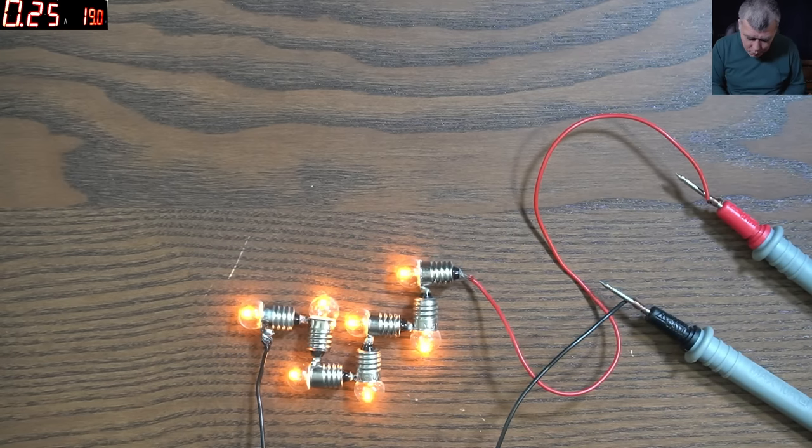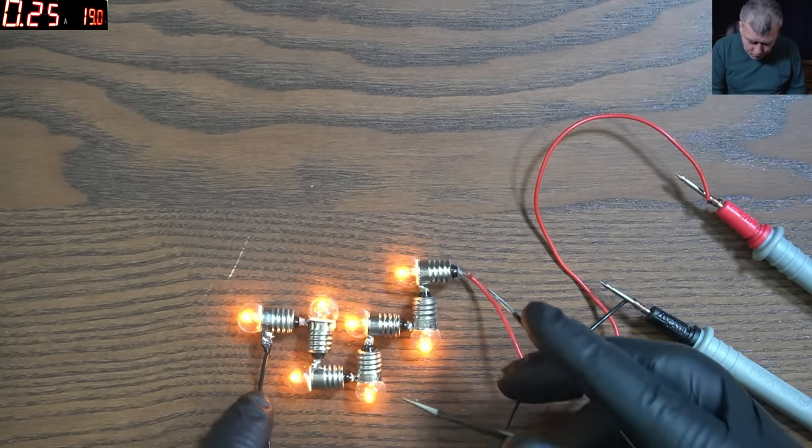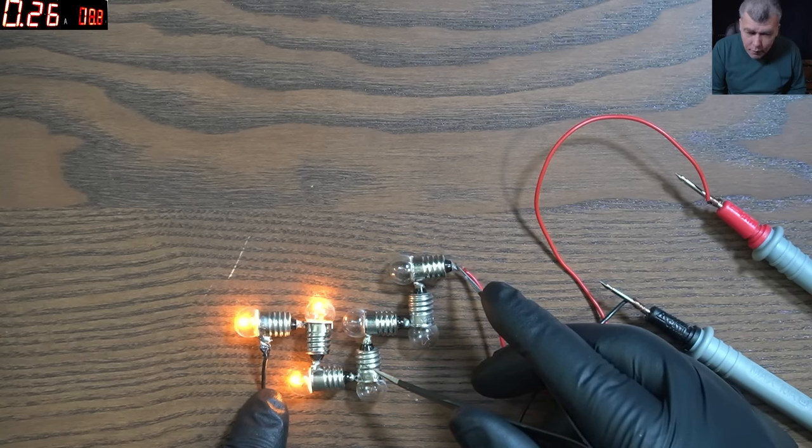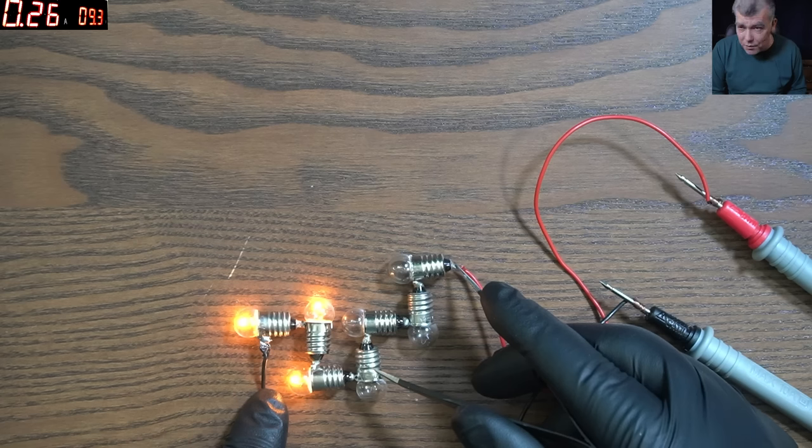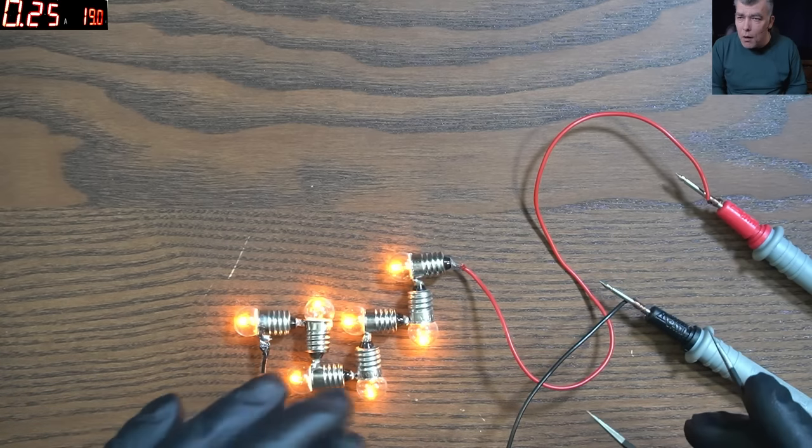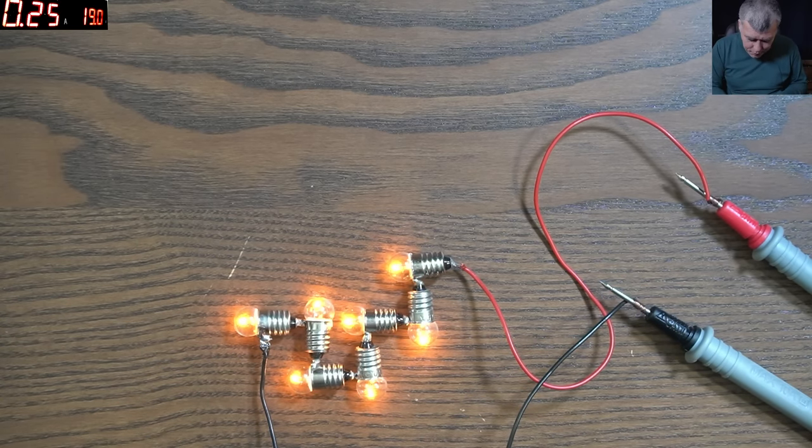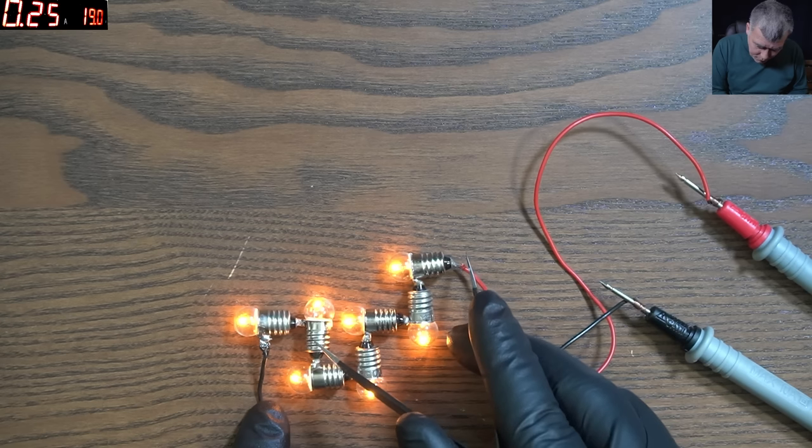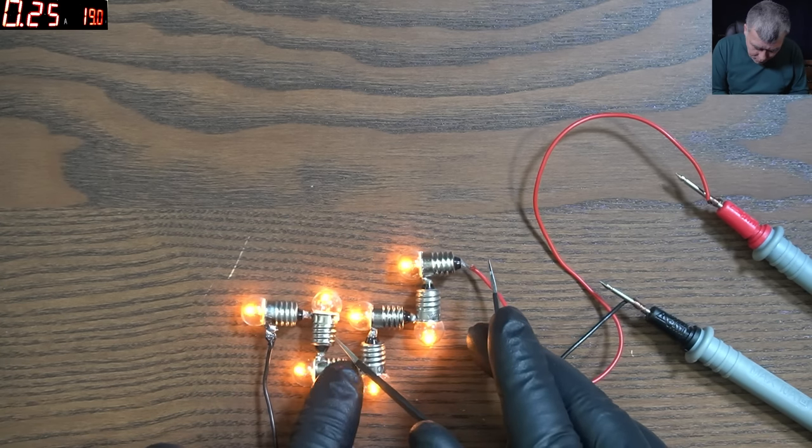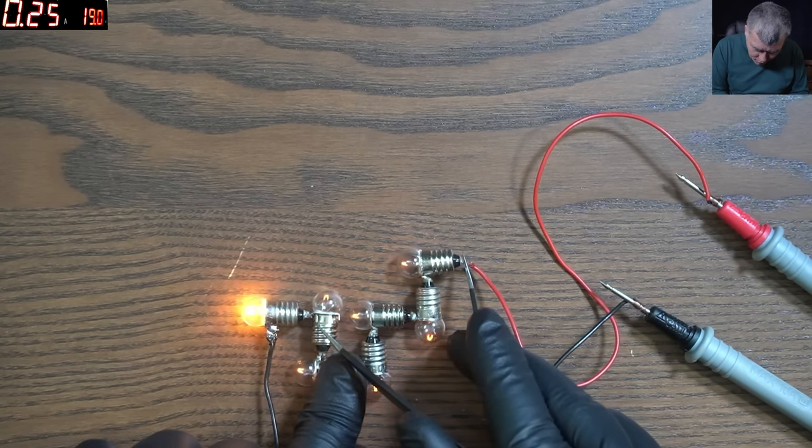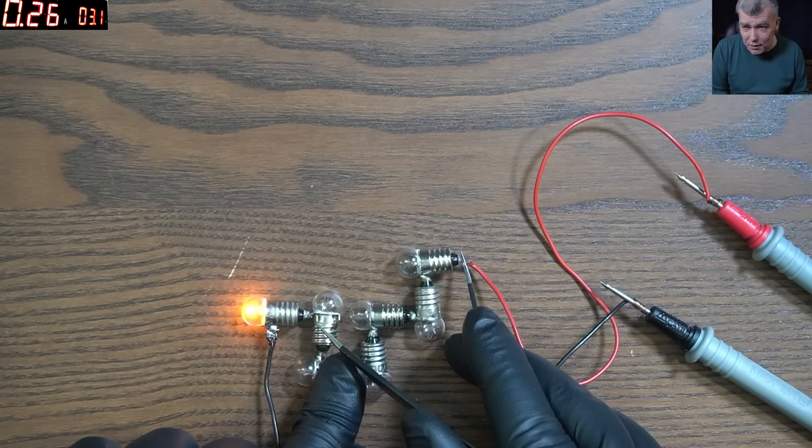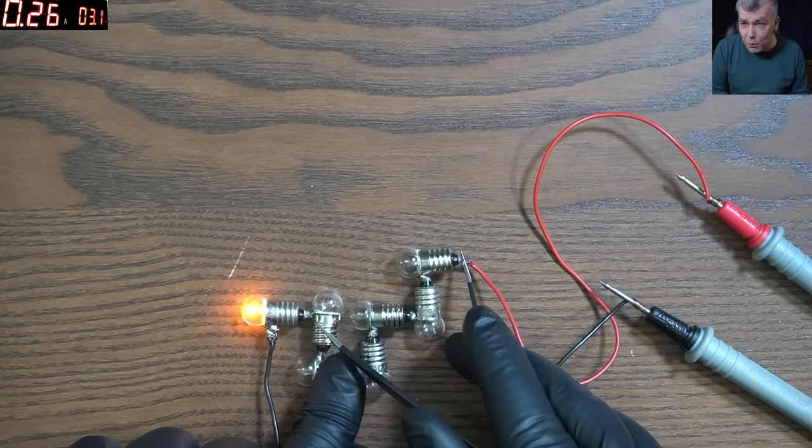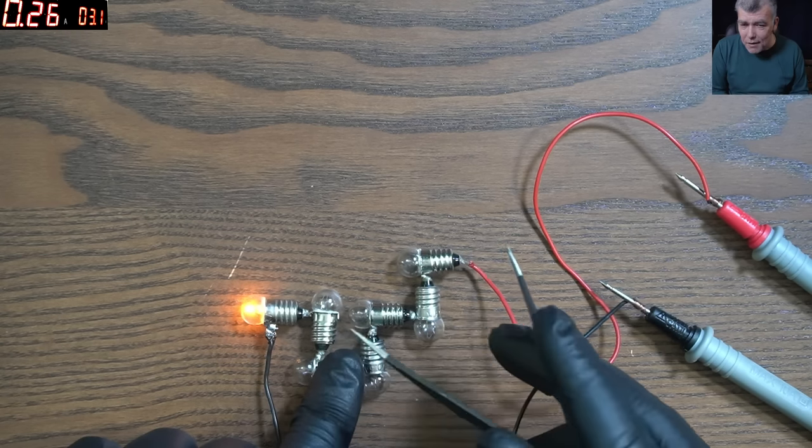Now let's short three. So even if we are shorting three light bulbs, the output is the same because the current is the same. Now let's short more. Let's try and short four. Same thing. But as you check on the power supply, the voltage gets dropped but the current is always the same. Now let's short all of them, just leave one. We have only one light bulb and the output is the same. You can see we have same current 260 milliamps but the voltage got dropped to three volts.